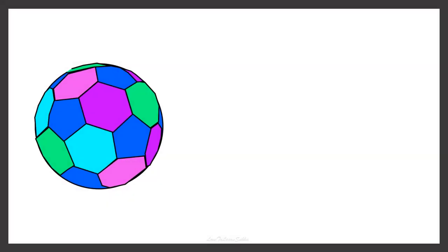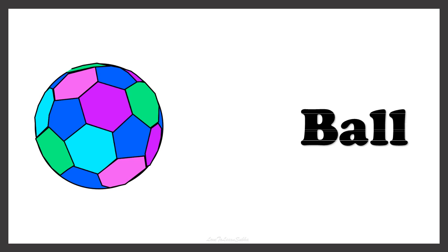Can you guess the name of this picture? Yes, it's BALL. Now we have to find the article that needs to be placed in front of the word BALL. Let's check the first letter of the word. The word BALL starts with the letter B. B doesn't come under vowel — B is a consonant. So whenever the word starts with a consonant, we use the article A. So this is A BALL.